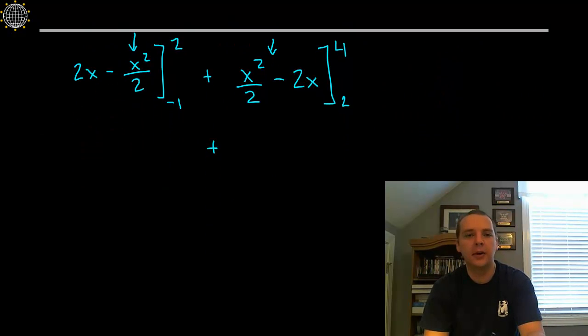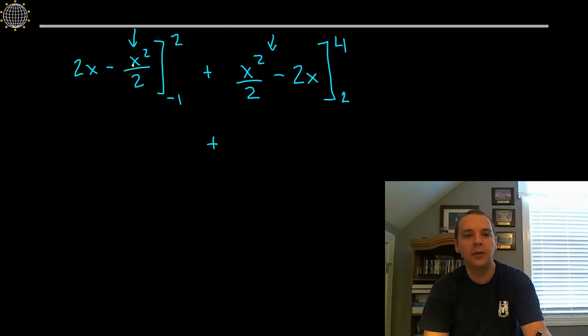Alright, next, and here I'm going to start color coding these so we don't get confused. I'll do this first one in yellow. So if you plug in a 2, 2 times 2 is 4, and then 2 squared is 4, 4 divided by 2 is 2. So 4 minus 2, we get 2. By plugging in 2, and you can check my algebra, I'm going through this kind of quickly here, we would get 2 as a final result. Ok, and then minus, 2 minus what? Let's plug in negative 1. 2 times negative 1 is negative 2. And then negative 1 squared is 1, 1 divided by 2 is a half. So negative 2 minus another half would be minus 5 halves.